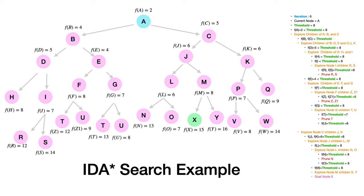For the final iteration 6, threshold = 8. We traverse from node A through B, C, D, E, and continue to the leaf nodes. Node U has F(n) = 8 but no further children, so we stop. Node M has F(n) = 8 equal to the threshold, so we pursue its children X and Y.